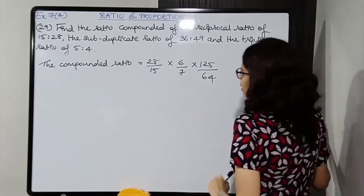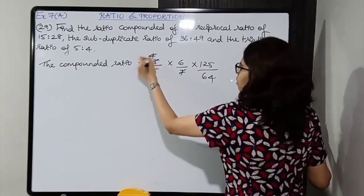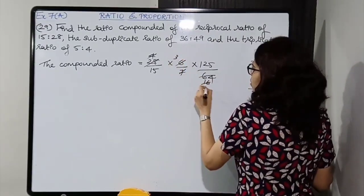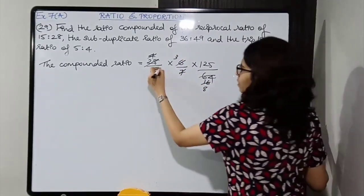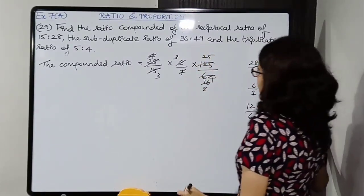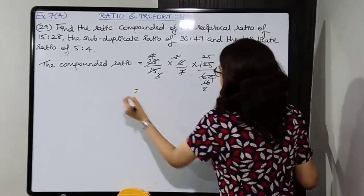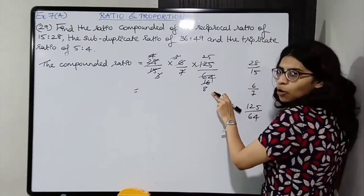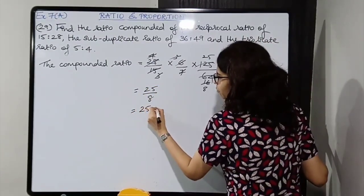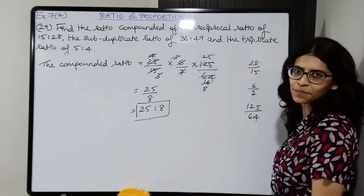Part B: if P minus X is to Q minus X be the duplicate ratio of P is to Q, then show that 1 upon P plus 1 upon Q is equal to 1 upon X. First, we will solve part A. We are given R squared equals PQ. We have to prove P upon Q is the duplicate ratio of P plus R is to Q plus R — meaning P upon Q equals the square of P plus R upon Q plus R.